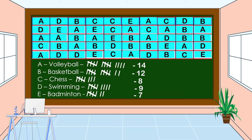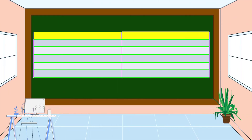We have 50 respondents in this survey. After we tally the survey result, we will make a table to organize the data. In our example, the first column represents the kind of sport, and the second column is the frequency. The frequency comes from the result of the tally.